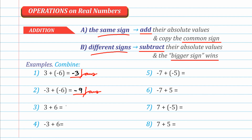More examples: negative 3 plus positive 6 — different signs, so subtract: 6 minus 3 is 3. The bigger sign is positive, so the answer is positive 3.